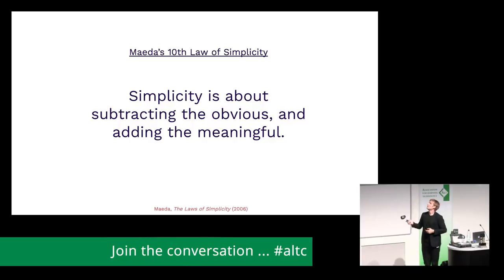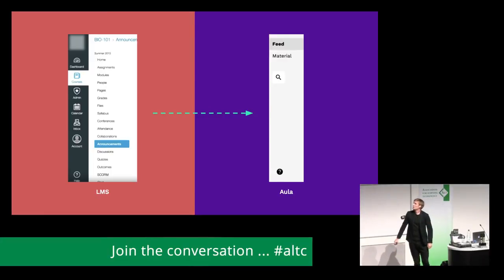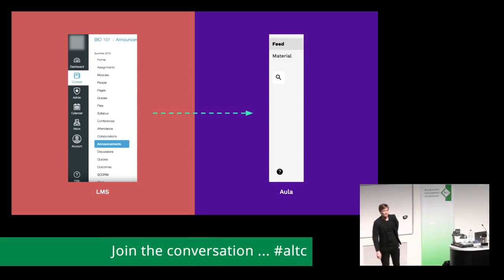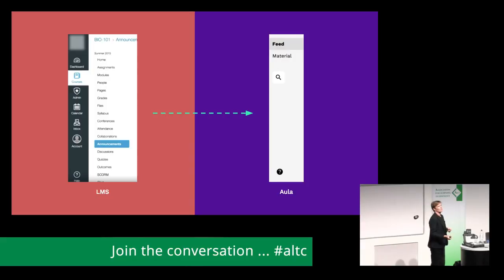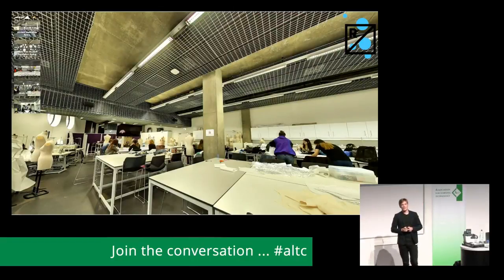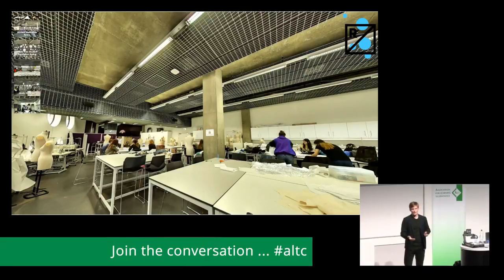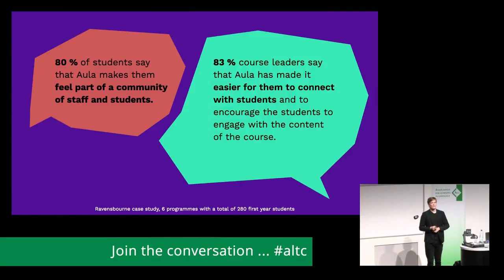This leads to quite radical implications. If you remove all the obvious things from a learning management system, build integrations to add things on top, and focus on the meaningful things — which for us is conversations — you end up with something radically different. Similar to the rooms I showed you from Ravensbourne and Coventry, it has radical implications for the way people perceive teaching and learning. The way Aula is designed is not that different from the intent of the architects at Coventry and Ravensbourne: it's open plan, you can get in touch with all students, you're never more than one click away from another student, it's built for collaboration and actively engaging students.